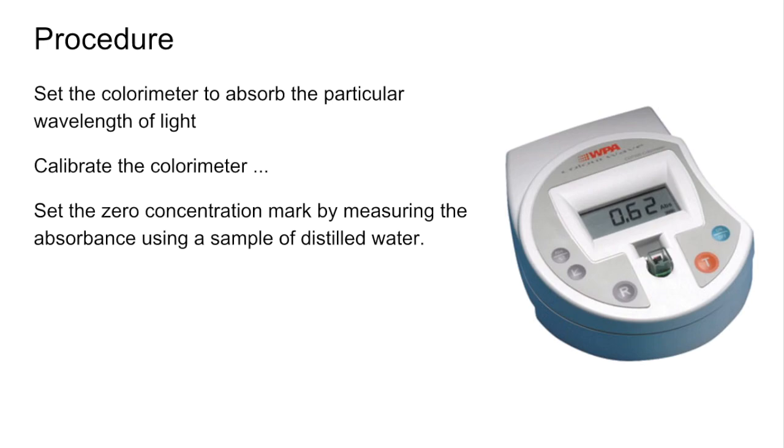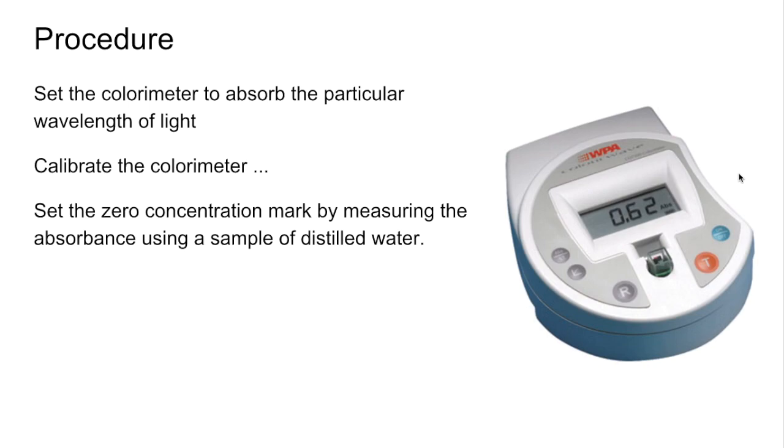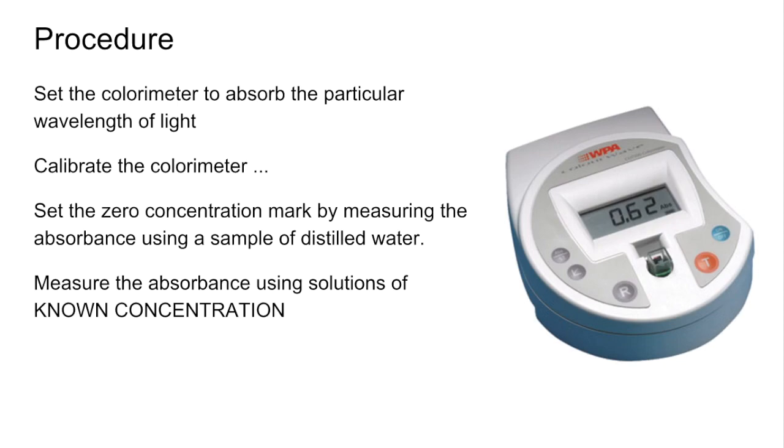You would then calibrate the colorimeter. How would you do that? The first thing you'd need to do is measure the absorbance at zero concentration. What you'd do is put some distilled water in this little plastic container here that sits in there and the light shone through there. You would put distilled water in there and measure the absorbance, and that's obviously your zero concentration mark.